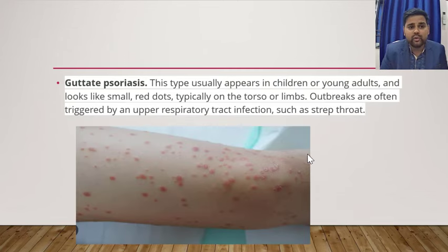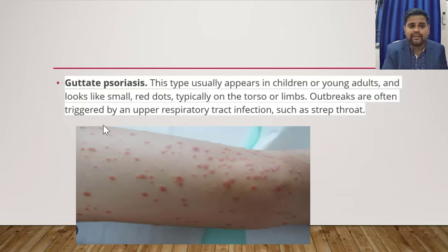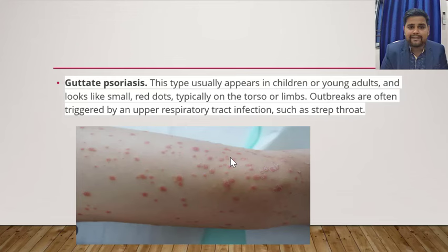Guttate psoriasis usually appears in children or young adults. You can see small red dots typically on the torso and limbs, and they are usually triggered by respiratory tract infections such as strep throat.